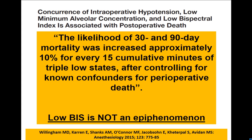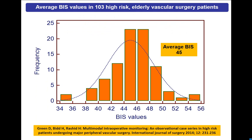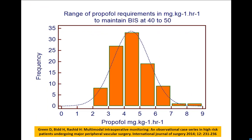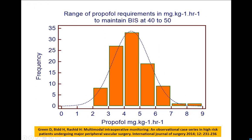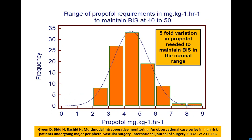Low BIS is not an epiphenomenon — it's because you are getting too much anaesthetic for your requirements. Our own study found our average BIS was 45, but there were some patients less. If you want to keep BIS in the normal range, you do need to be changing the amount of anaesthetic you're giving. We found a five-fold variation in propofol needed to maintain BIS in the normal range — so if you're monitoring it, you need to be prepared to alter the amount of anaesthetic.